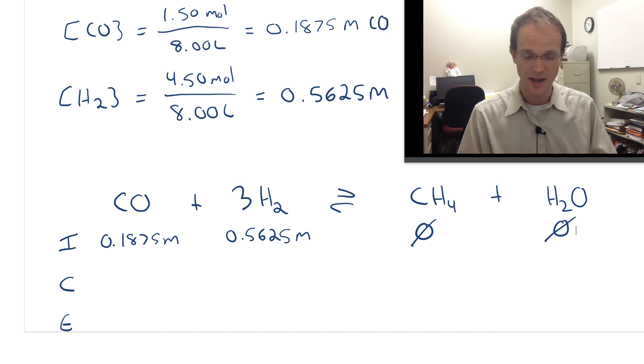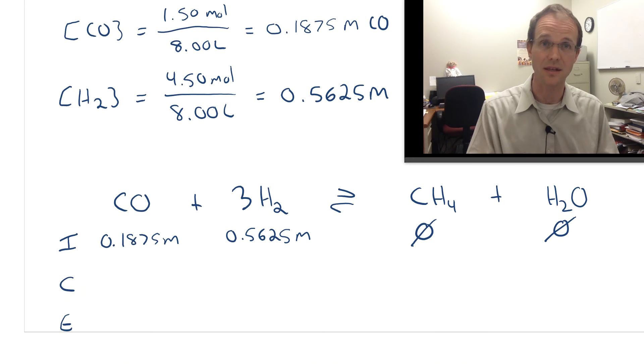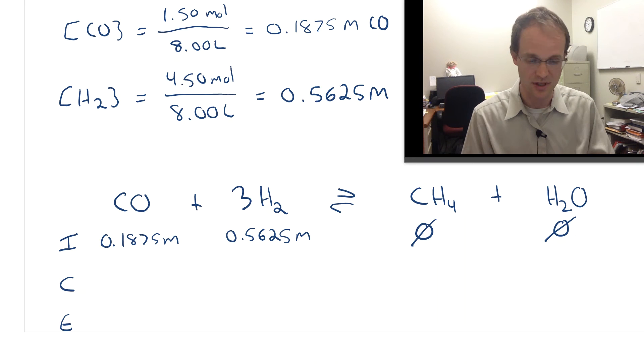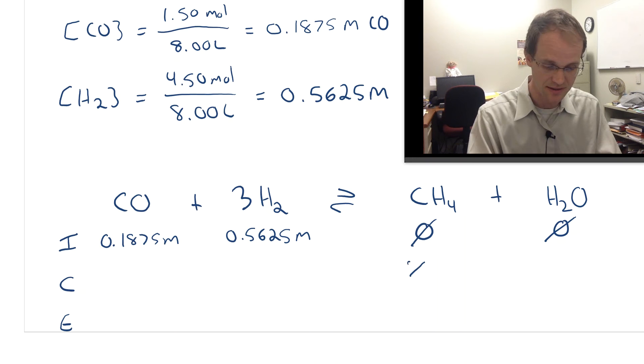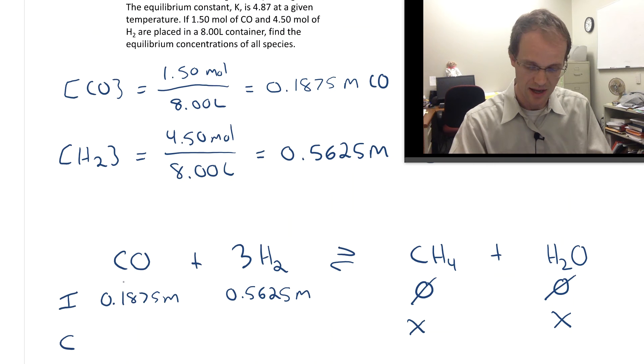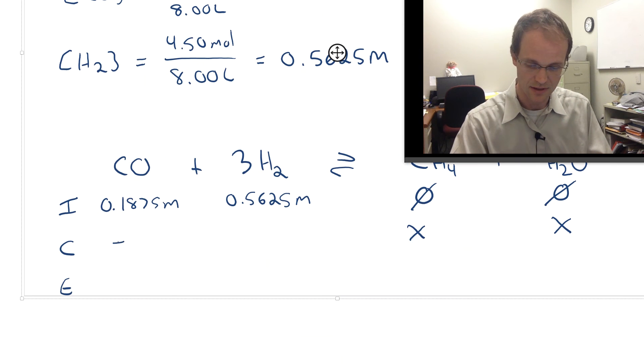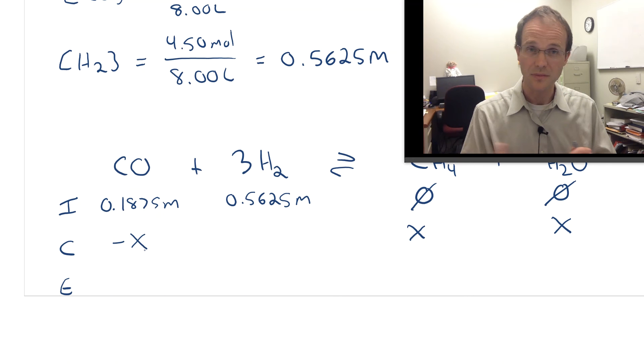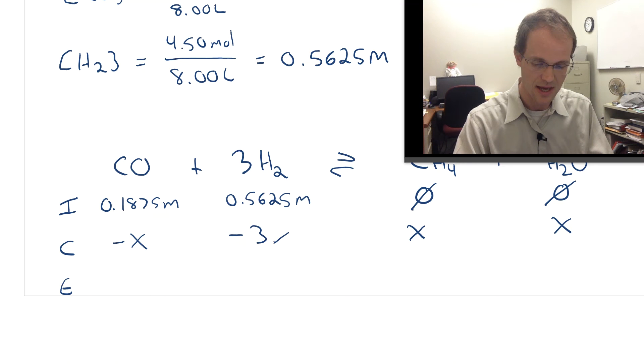We just make up a number. How much is the reaction going to run? I don't know—it's going to run X. Which way? Well this one's easy. There's no products, so we know we have to form products. We can't run the reaction in reverse. So let's say we're going to produce X products. Stoichiometrically, if I produce X CH4s, I'm also going to produce X waters. The ratio is 1 to 1 on CO and methane, so I'm using up X of that—that's minus X. For H2, the stoichiometry says I need three H2s for every carbon monoxide, so I'm going to put minus 3X here.